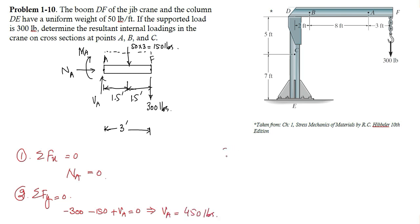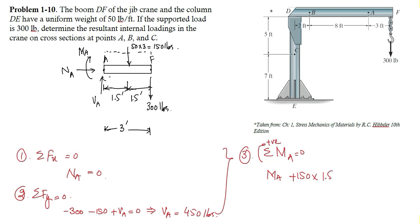To determine MA, we apply the third condition of equilibrium — summation of all moments at point A equal to zero, considering clockwise moments as positive. MA is considered clockwise, hence positive. The moment due to 150 pounds is also positive, with a moment arm of 1.5 feet. The moment due to 300 pounds is also clockwise and positive, with a magnitude of 300 multiplied by 3 feet (the distance from A to F). From this equation, MA equals −1,125 pound-feet. The negative sign indicates the actual direction of MA is anti-clockwise.